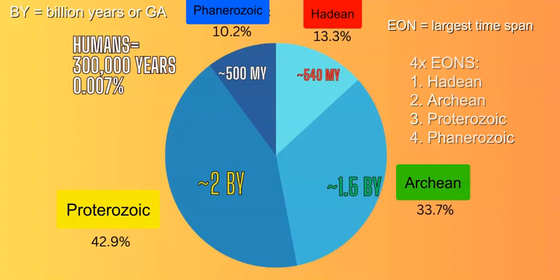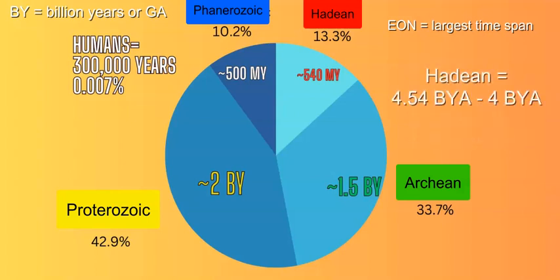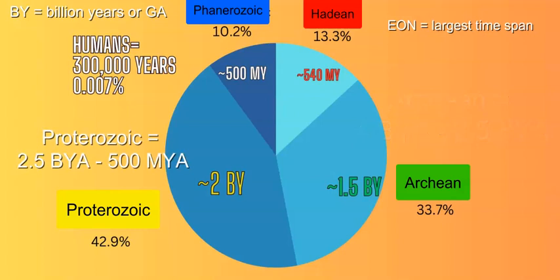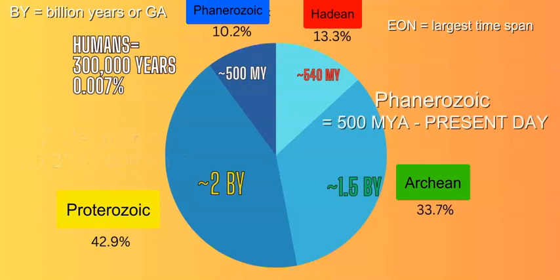The Hadean is the first eon after the Earth's formation, lasting about half a billion years, accounting for 13.3% of Earth's time — that's when the Earth was just forming. Then comes the longer Archean, which is 1.5 billion years, about 33.7%, around a third of the time. Next is the Proterozoic at 42.9%, which is 2 billion years. Finally, the Phanerozoic is 10.2%, another half billion years, and is the eon we are currently in.